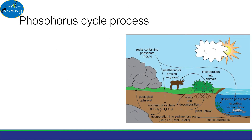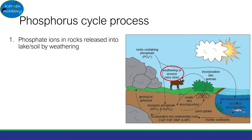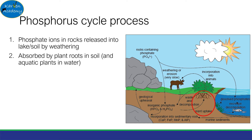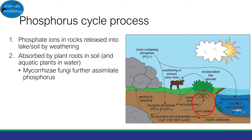Let's start with the phosphorus cycle. The process starts when phosphate ions in the rocks are released into the lake or soil by weathering. These are then absorbed by plant roots. Note that mycorrhizae fungi, which are present in certain soil plants, further assimilate phosphorus.